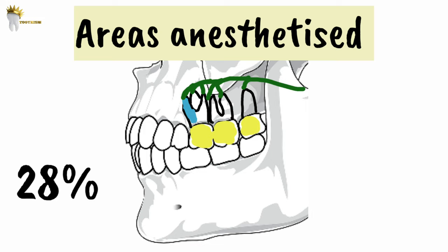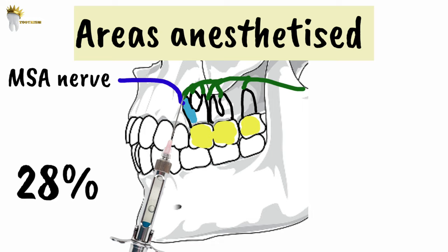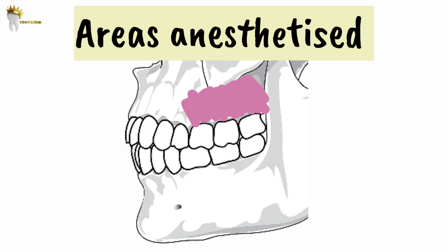In these cases, the mesiobuccal root is innervated by the middle superior alveolar nerve, so we have to give a second supraperiosteal injection — that is, a local infiltration — when the first molar is not effectively anesthetized. The PSA nerve block also anesthetizes the buccal periodontium and the overlying bone of these teeth.